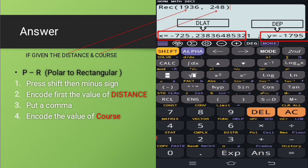So after downloading, I can already use that one. And in this case, we have the distance and the course. We are going to use the polar to rectangular process. So first, you need to press the shift button.